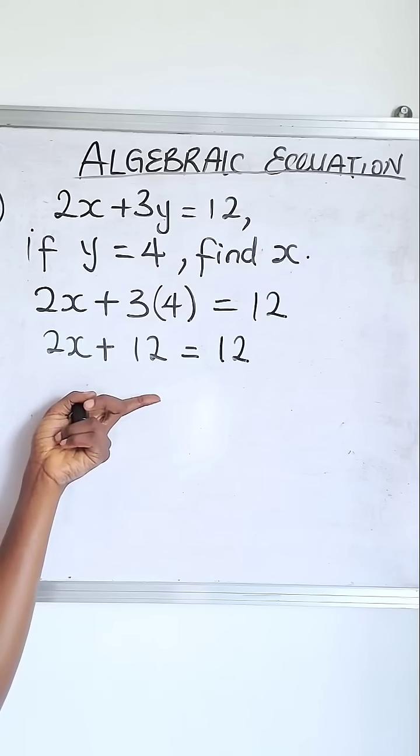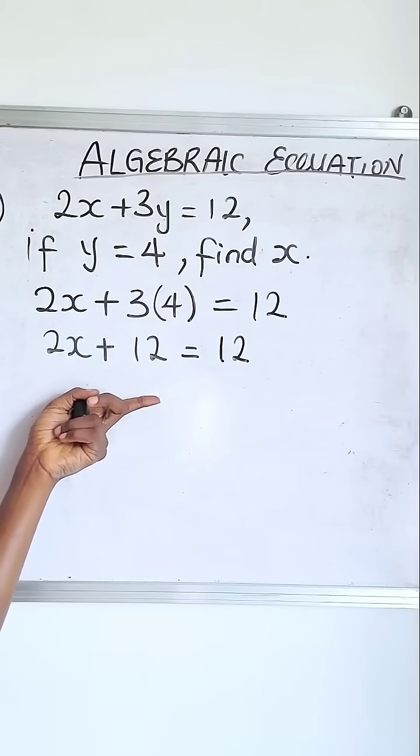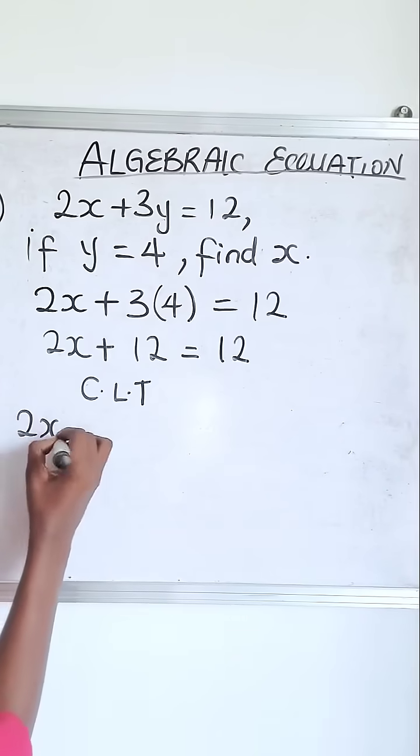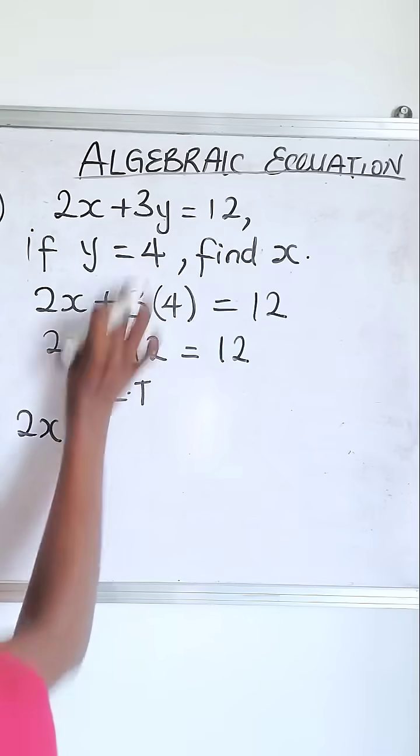Now when you get here, this looks familiar. It looks like what we did previously. So you collect like terms, or subtract 12 from both sides, whichever one works for you. This one has x, it's on its own, while this is going to meet a sibling.